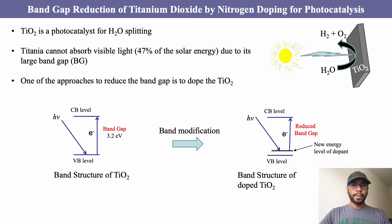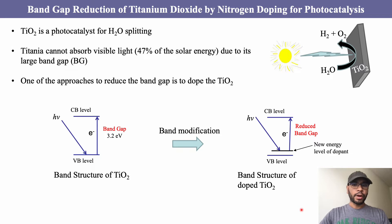Hello everyone. In this video I'm going to explain the band gap reduction of titanium dioxide by nitrogen doping for photocatalysis. Titanium dioxide is a semiconductor photocatalyst which is widely used for water splitting to produce hydrogen gas, which is a renewable energy source or fuel.